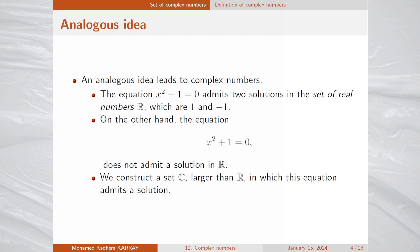The idea leading to complex numbers is very similar. The equation x squared minus 1 equals 0 admits two solutions in the set of real numbers R: 1 and minus 1. On the other hand, the equation x squared plus 1 equals 0 does not admit a solution in R. So we construct a set denoted C, larger than R, in which this equation admits a solution.